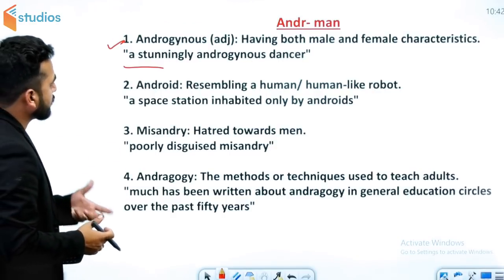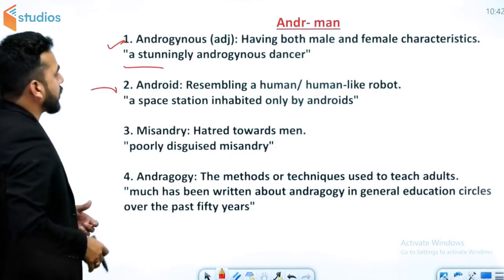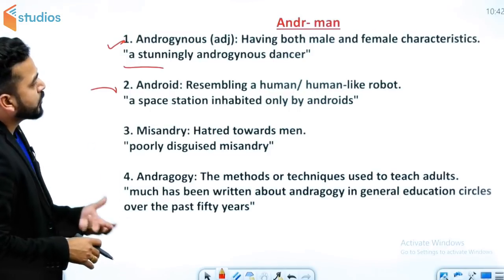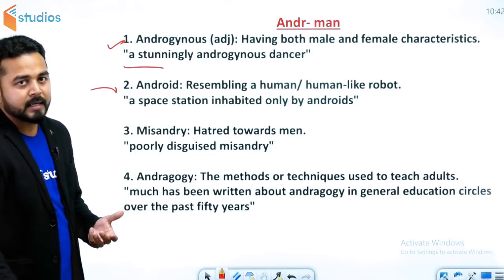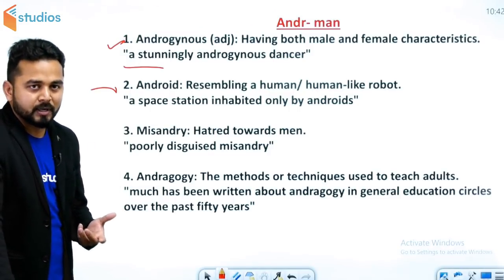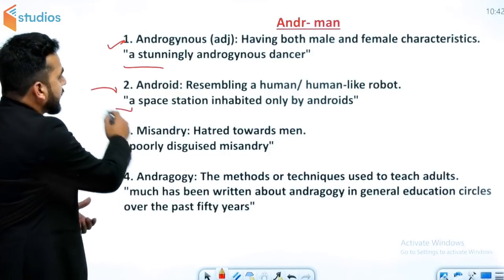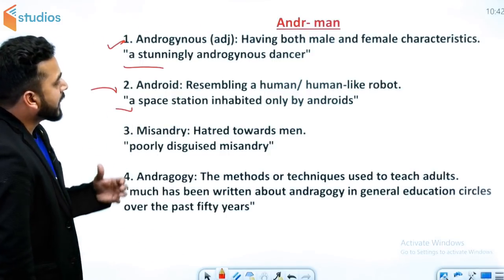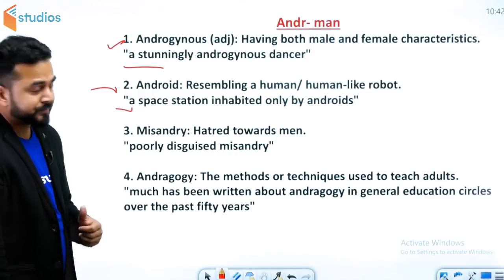Second word है android. Android means resembling a human — यानी human-like robot को android कहते हैं। आप लोग android phone लेते हैं। Example: space station inhabited only by androids.